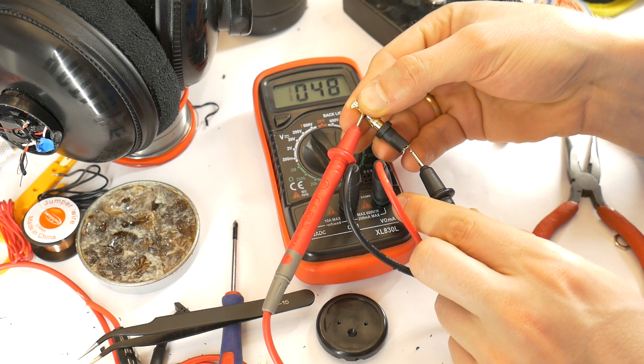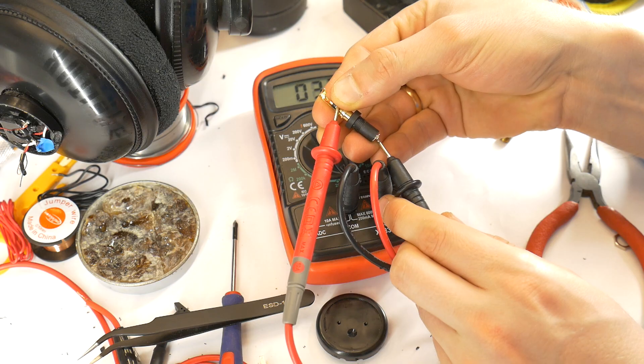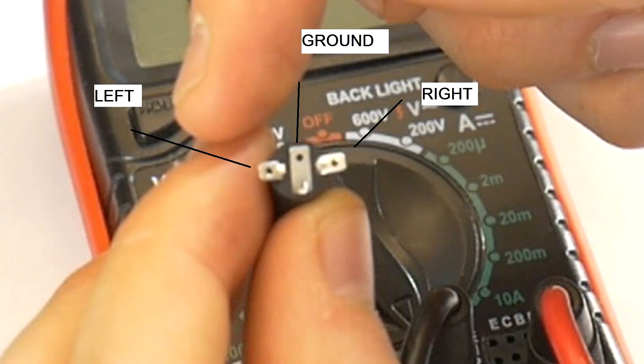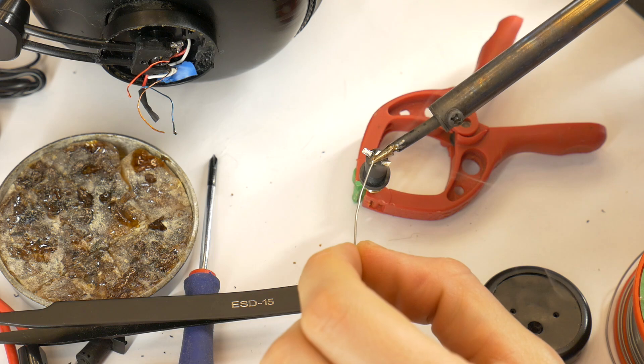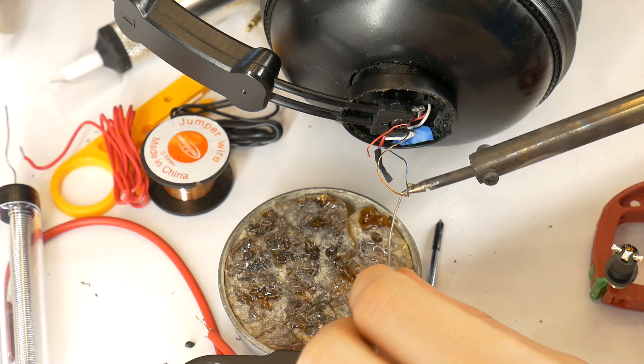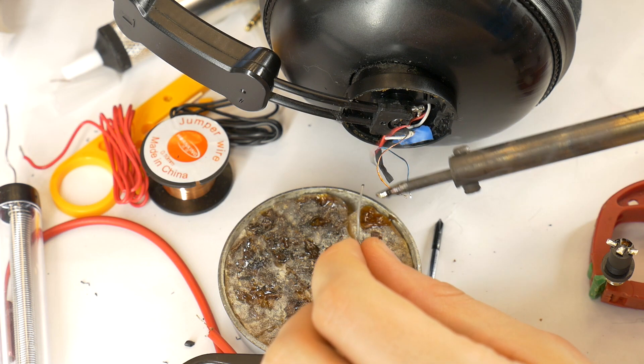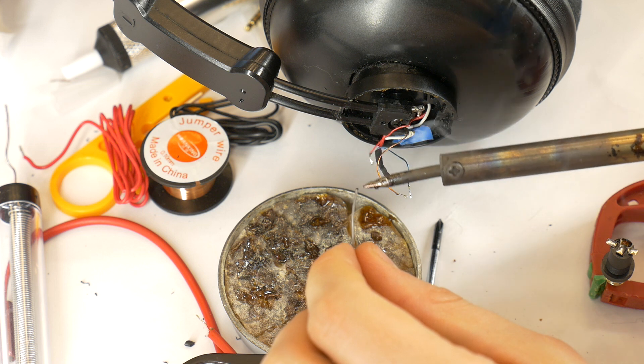The next step is to use a multimeter to find out the socket pinouts, which contact is for the left, right and ground. Then tin the socket contacts and wires. This will make the soldering process easier and improve the quality of the solder.